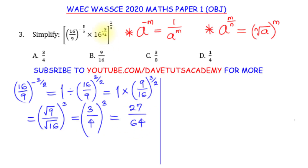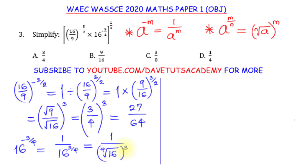For the second expression, 16 raised to power minus 3 over 4 becomes 1 over 16 raised to power 3 over 4. This is 1 over the fourth root of 16, raised to power 3. The fourth root of 16 is 2 because 2 times 2 times 2 times 2 equals 16. So this is 1 over 2 raised to power 3, which is 1 over 8.